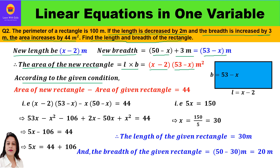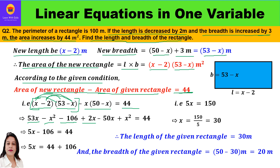According to the given condition, the difference between the area of the new rectangle and the area of the given rectangle is 44. So: (x − 2)(53 − x) − x(50 − x) = 44. Expanding: 53x − x² − 106 + 2x − 50x + x² = 44. The x² terms cancel out, leaving 53x + 2x − 50x − 106 = 44, which gives 5x − 106 = 44.